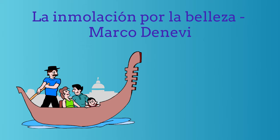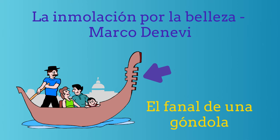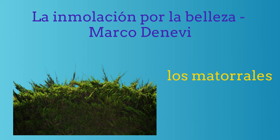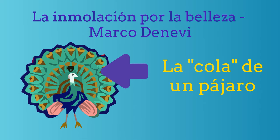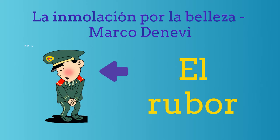Esta parte de aquí es el fanal de una góndola. Esta es una imagen de matorrales. Esta es la imagen de un alfiletero. Esta es una imagen de la cola de un pájaro. Las mejillas rojas muestran el rubor de la persona.